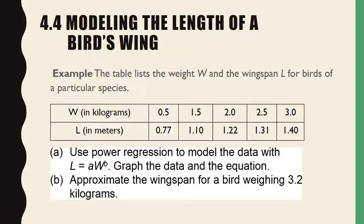To do this, hit the stat button then edit. In list one put the weight — that's your X list: 0.5, 1.0, 1.5, 2.0, 2.5, and 3.0 — and list two will be the length in meters. Once you've put the lists in, go back to stat, but this time go to the calculate function and choose power regression — it's letter A in the menu, labeled P-W-R-R-E-G. Hit enter twice to get the equation.